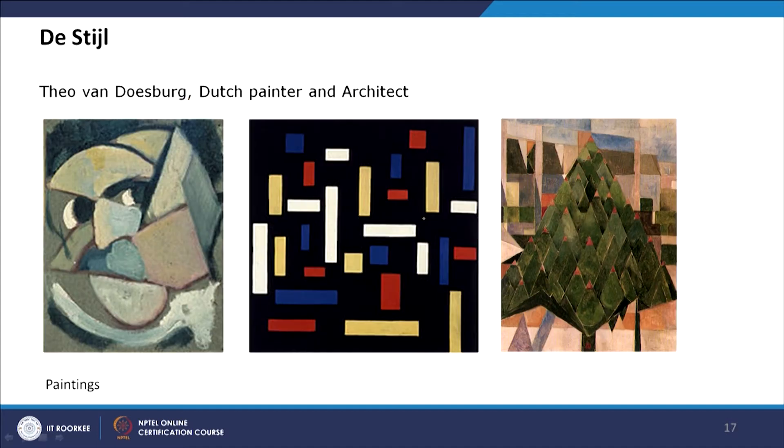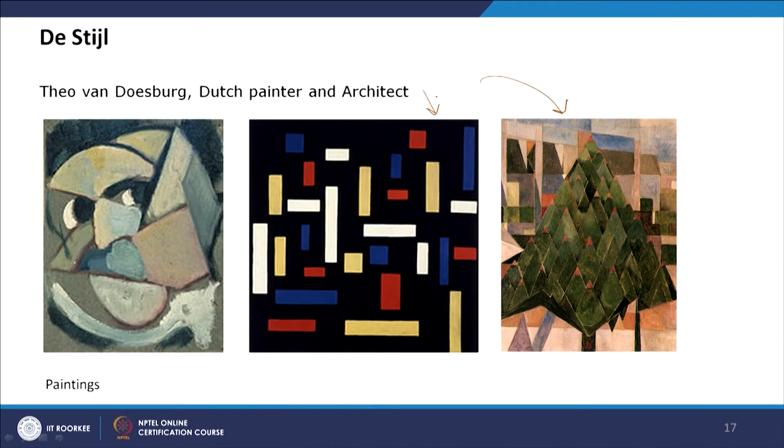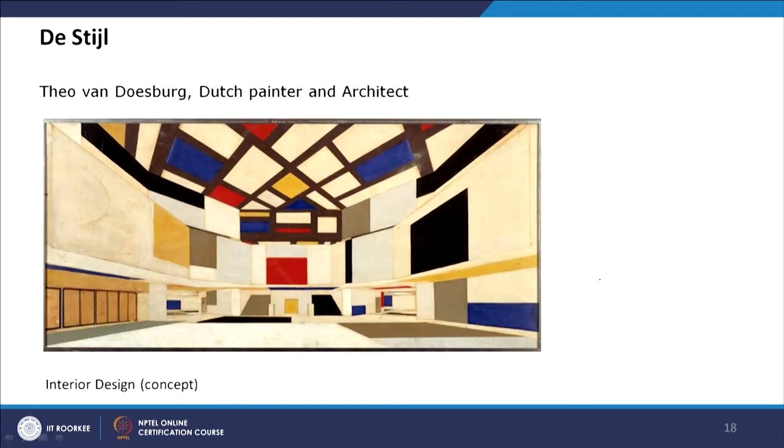In Theo van Doesburg's other works, there is expression of a figurative tree broken into geometry. Here there is some expression and metaphorical representation of a tree — unlike the pure art for art's sake of Bauhaus and Kandinsky's work which does not convey any specific meaning. Looking at Theo van Doesburg's interior design, we can understand why the architectural Bauhaus movement and the De Stijl movement — which emerged from visual art — are slightly different. Their color tone is the same and their way of articulation is the same, but the movement which emerged from fine arts is philosophically a little different from Bauhaus.